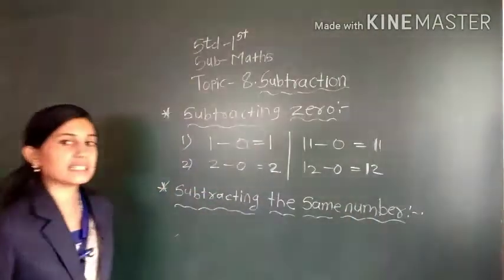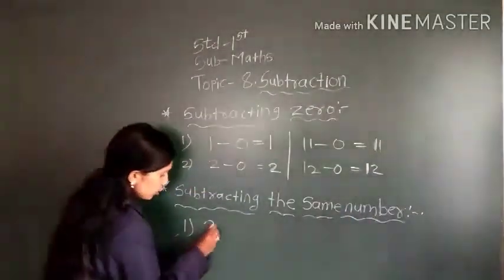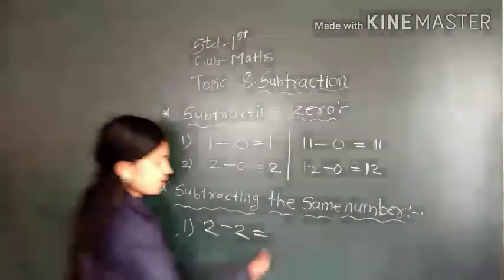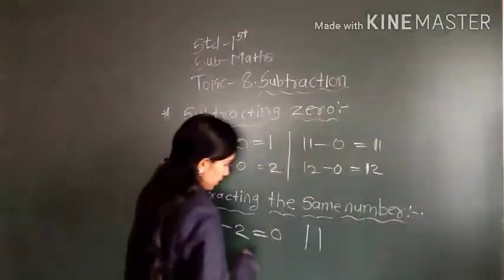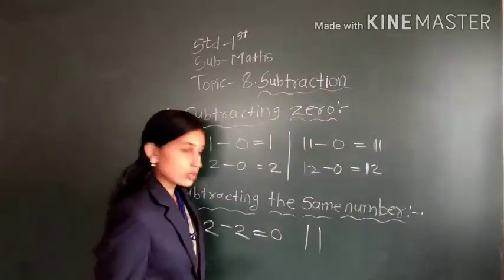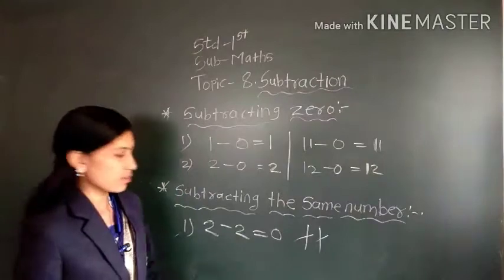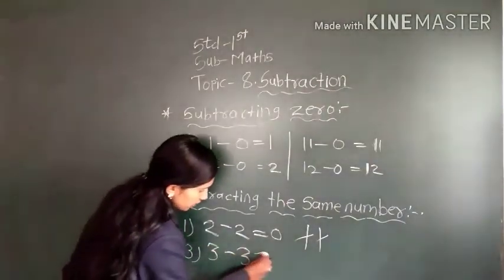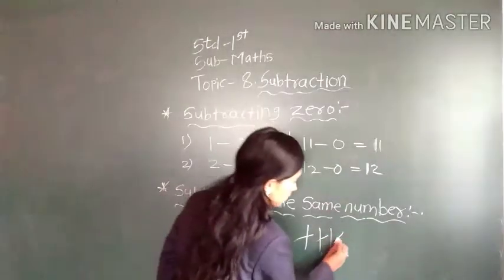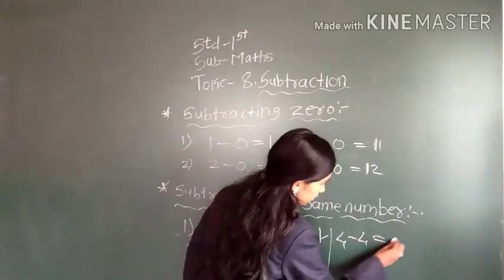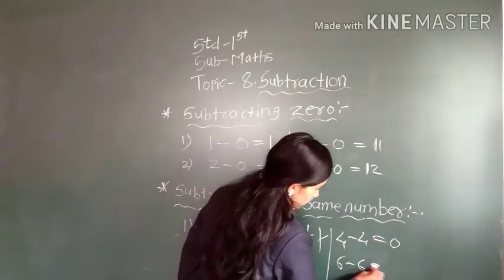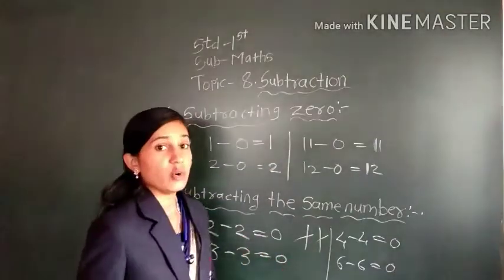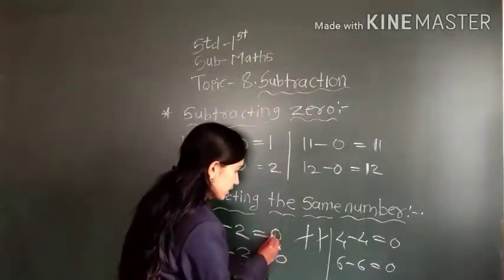Subtracting the same number — means two minus two. If we subtract two from two, what answer do we get? Zero. We draw two lines and also minus two — two from two subtracted, nothing is left, means zero. Three minus three is equal to zero. Four minus four is equal to zero. When we subtract the same number from the same number, the answer is zero.